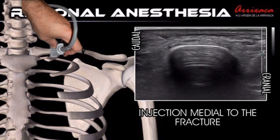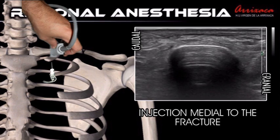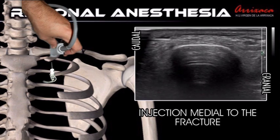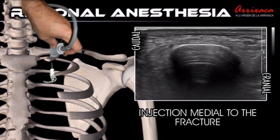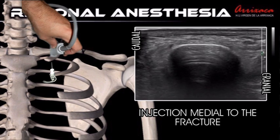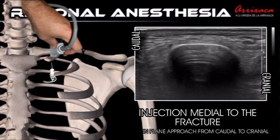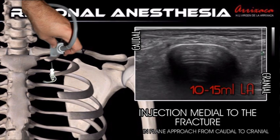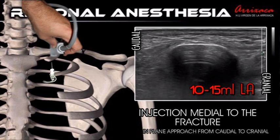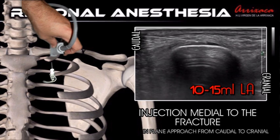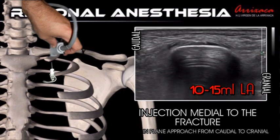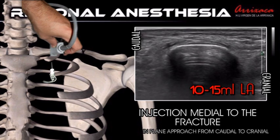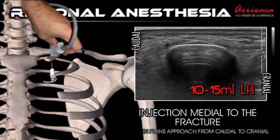The needle is inserted in-plane from caudal to cephalic, and the local anesthetic is injected between the periosteum and the clavipectoral fascia. This is a simple and highly safe procedure that will provide anesthesia and prolonged analgesia for mid-shaft clavicle fractures.